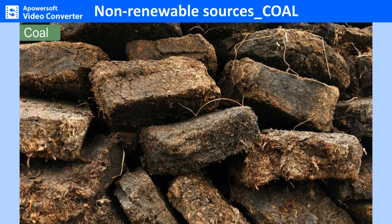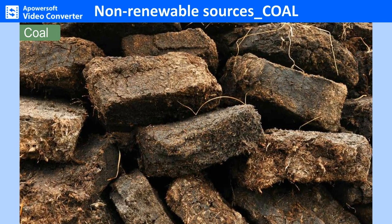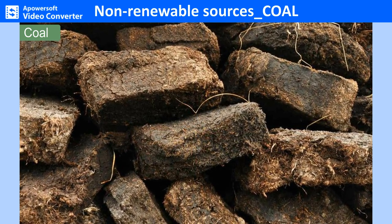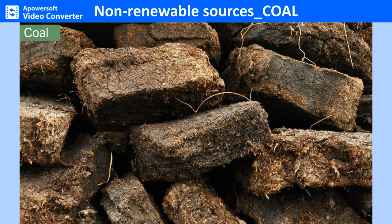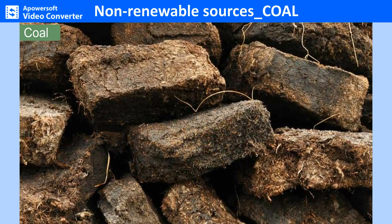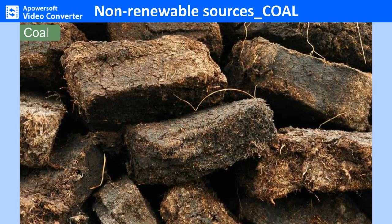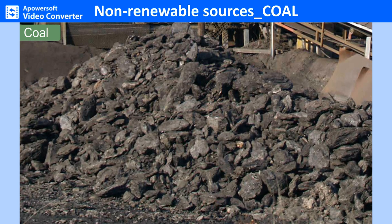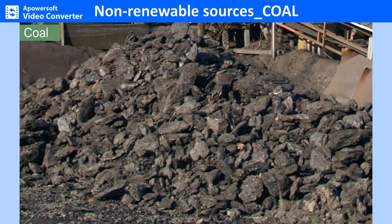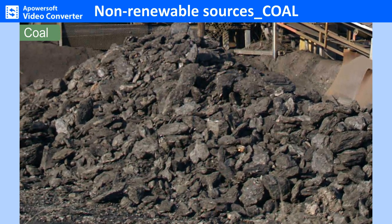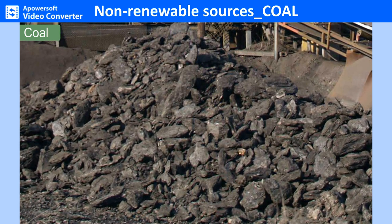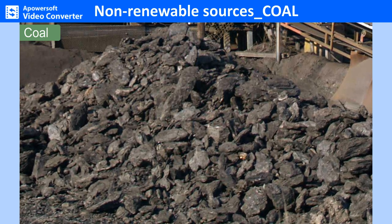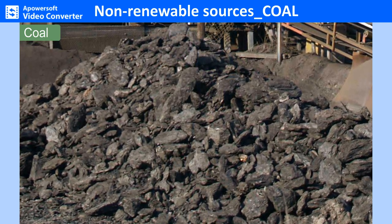Peat is the first stage of coal formation. It is brownish with a high percentage of moisture and low carbon content of 45% to 60%. Its low heating capacity allows it to be used only as a domestic fuel. Lignite, or brown coal, is the second stage of coal formation. It has a high moisture content and much volatile matter, and is used in generating electricity and for the manufacture of gas, plastics and nylon.